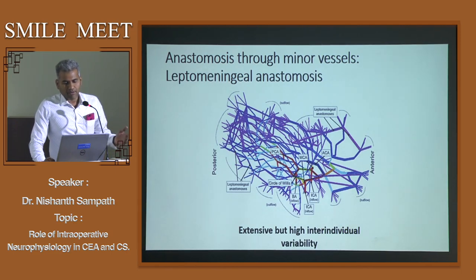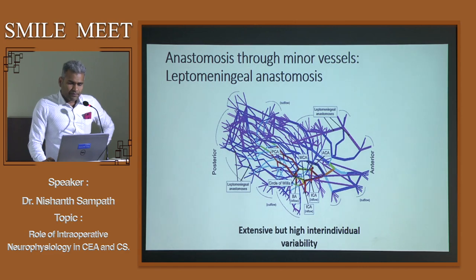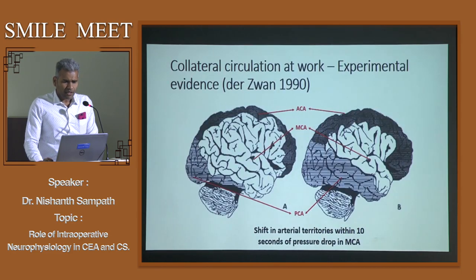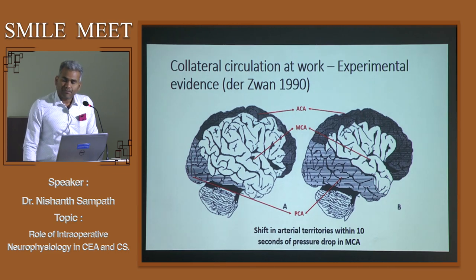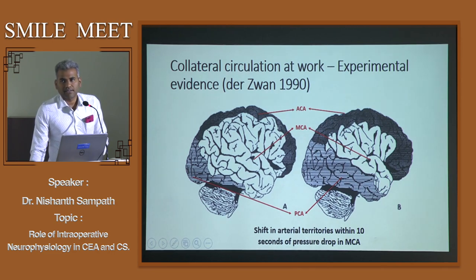Apart from major vessels, another system we are often not sensitized to is the leptomeningeal system — analogous to a high-traffic system. However, these leptomeningeal anastomoses are highly variable across individuals, so we cannot rely on them to successfully complete carotid cross-clamping. Experimental evidence shows collateral circulation can respond within 10 seconds of a pressure drop in the middle cerebral artery, with ACA and PCA territories redistributing into the MCA territory.